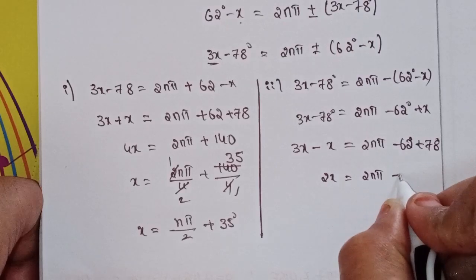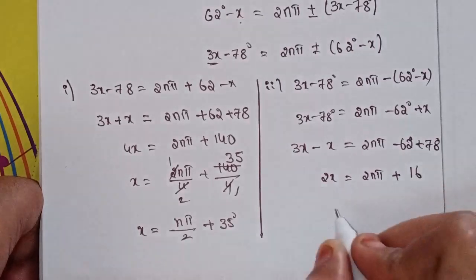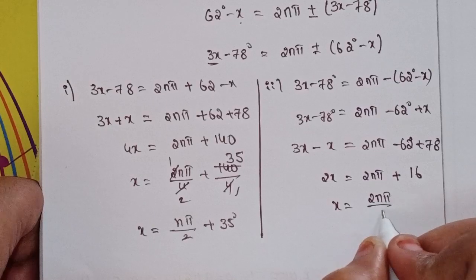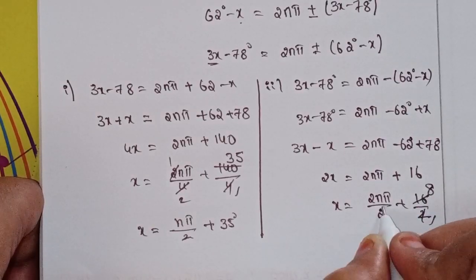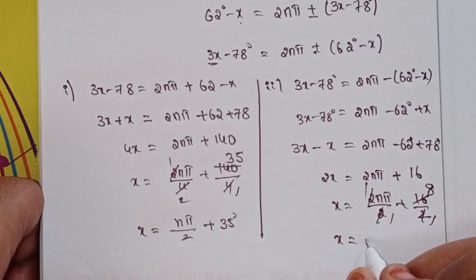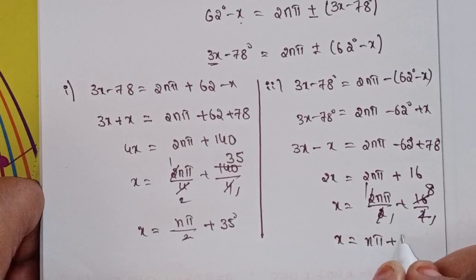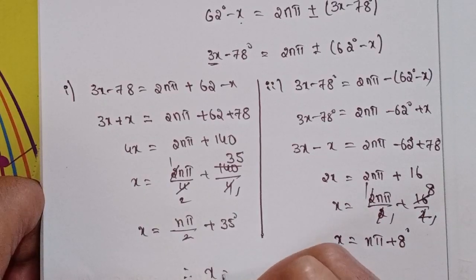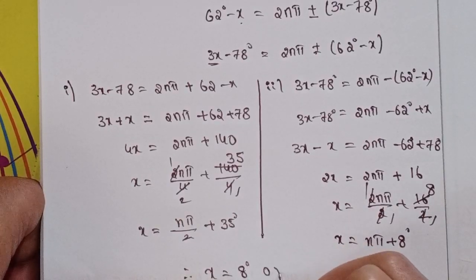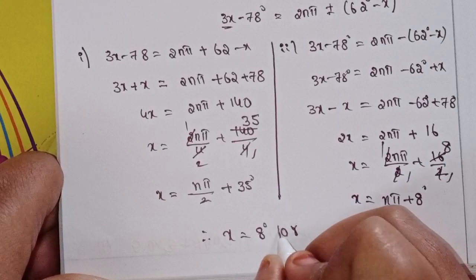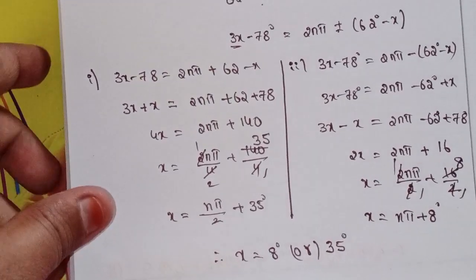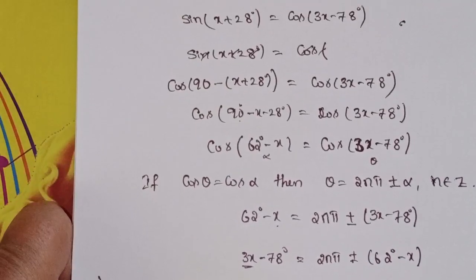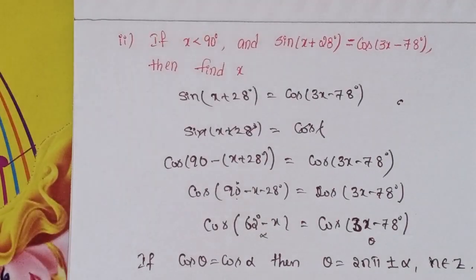Therefore x = nπ + 8°. So the x values are x = 8° or x = 35°. This is the solution for question number 4. In the next class we will discuss question number 5. Thank you for watching my video, take care.